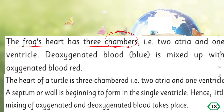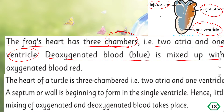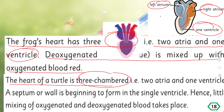The frog's heart has three chambers — two atria and one ventricle. This is the heart of a frog: it has a left and right atrium and one ventricle. The frog has a three-chambered heart. In the frog's heart, deoxygenated blood is mixed up with oxygenated blood, and in this way gas exchange takes place.